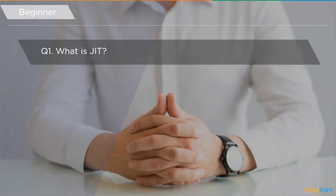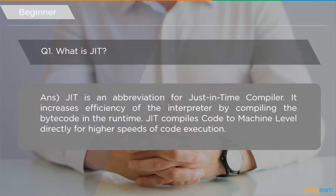The first beginner-level question is: what is JIT? JIT is an abbreviation for Just-In-Time compiler. It increases efficiency of the interpreter by compiling the bytecode at runtime directly to machine level for higher speed of code execution. Just-in-time compilation is a feature added to Java's interpreter, involving conversion of code directly to machine level during the compilation stage.